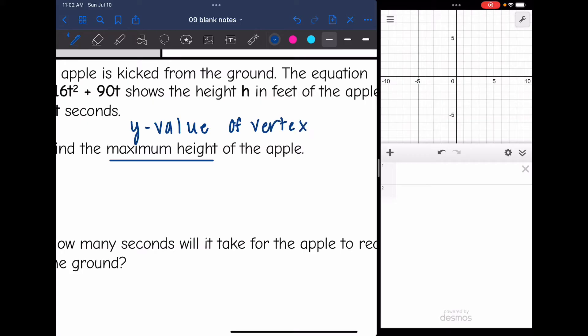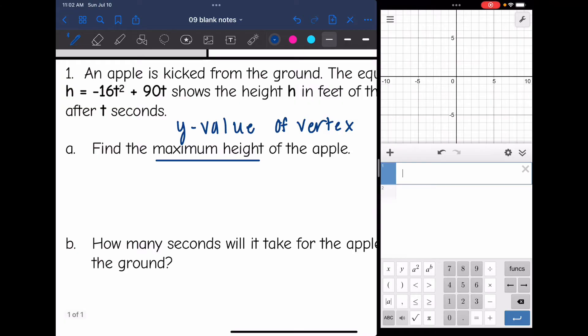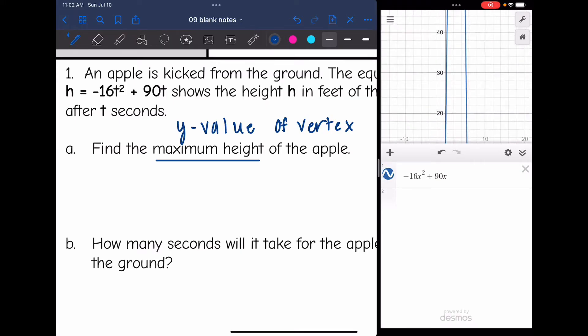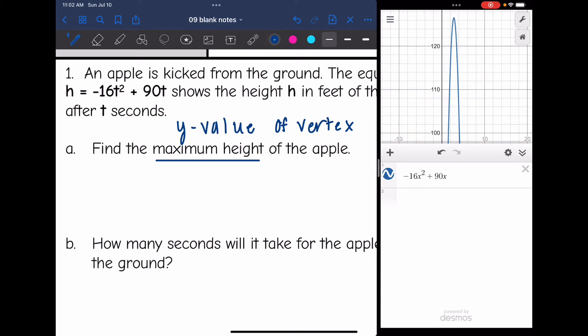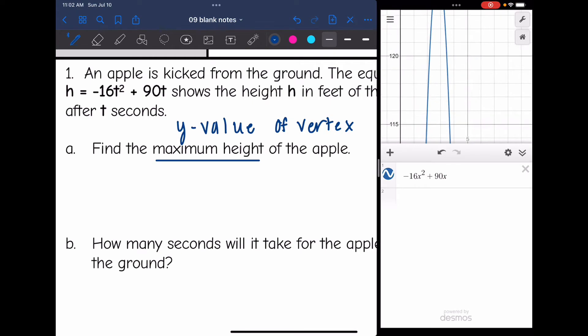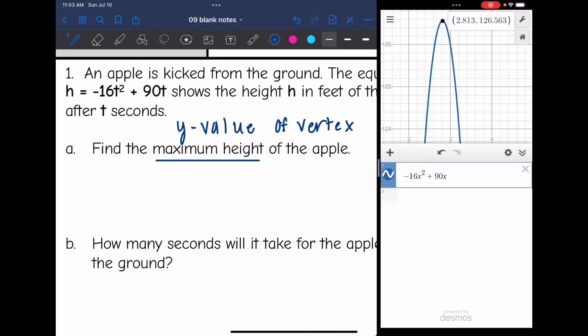Let's graph this. Whenever you graph in Desmos, make sure you change those t's to x's. So it's going to be -16x² + 90x. I need to zoom out quite a bit. There is the maximum height. There's the vertex, and the maximum height is 126.563 feet.